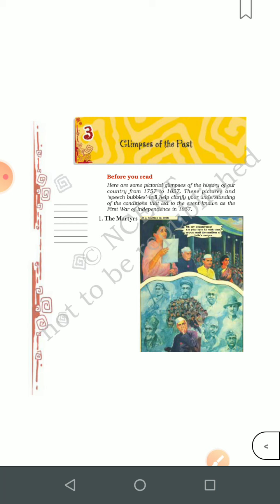Some religious leaders supported social evils such as untouchability and child marriage, which were prevalent at the time. The British government did not address these social problems. Religious leaders were looking after these societal issues. The British also forbade crossing the seas and going abroad — they did not want Indians to go abroad and trade with other countries.